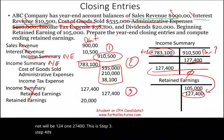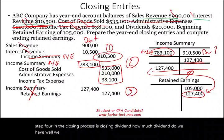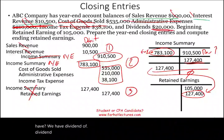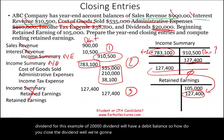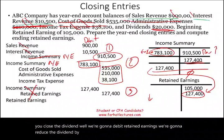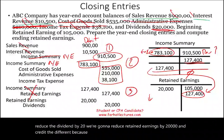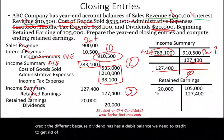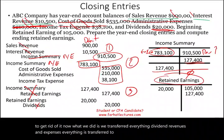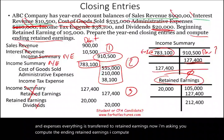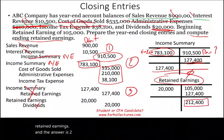Step four in the closing process is closing dividends. We have dividends of $20,000, which has a debit balance. To close dividends, we debit retained earnings $20,000 and credit dividends. This reduces retained earnings by $20,000. Now everything — dividends, revenues, and expenses — has been transferred to retained earnings. Computing the ending retained earnings gives us $212,400.